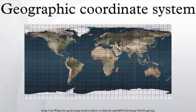The coordinates are often chosen such that one of the numbers represents vertical position, and two or three of the numbers represent horizontal position. A common choice of coordinates is latitude, longitude and elevation.